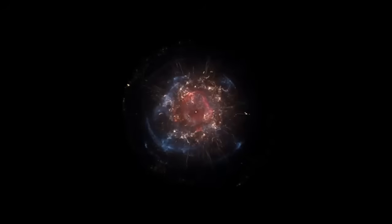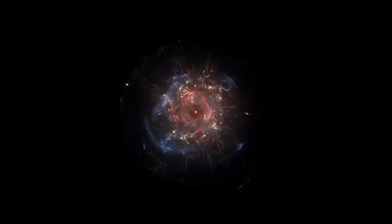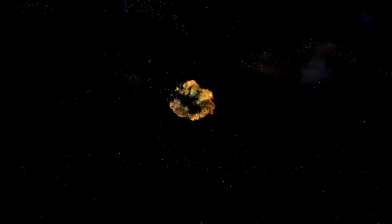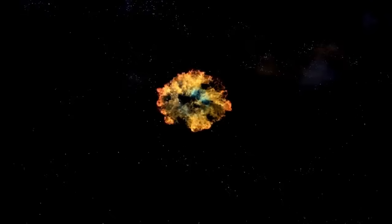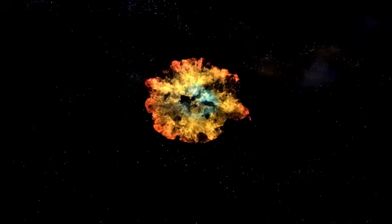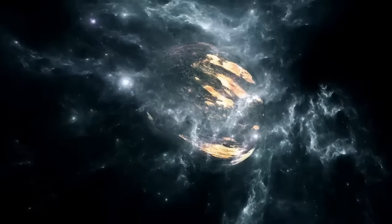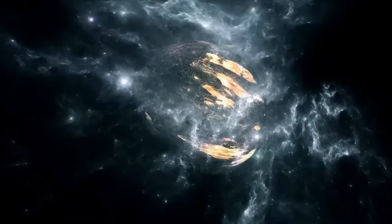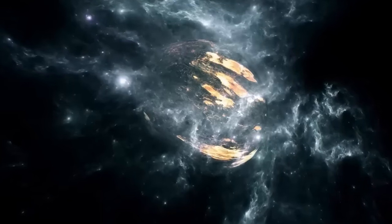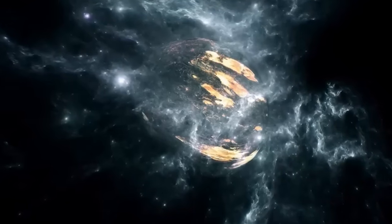When a star like Betelgeuse explodes, the results are both spectacular and violent. A supernova marks the catastrophic end of a massive star's life. Once the star runs out of nuclear fuel, it can no longer counteract the force of gravity. This causes the core to collapse, followed by a colossal explosion that sends shockwaves and radiation across space.